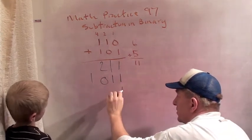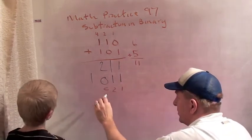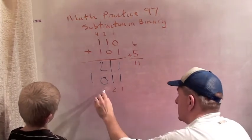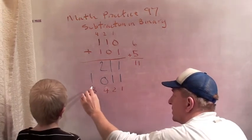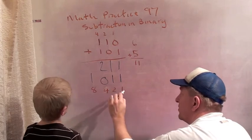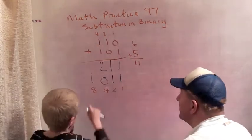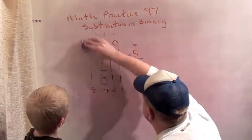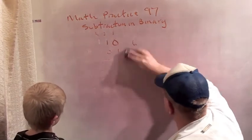And so six plus five should be eleven. Now this is the one's digit, the two's digit, the four's digit, and the eighth digit. So this is eight plus two plus one, which is eleven. Yay. Okay, so that was a good, quick addition review.